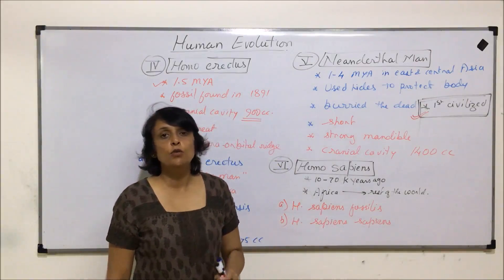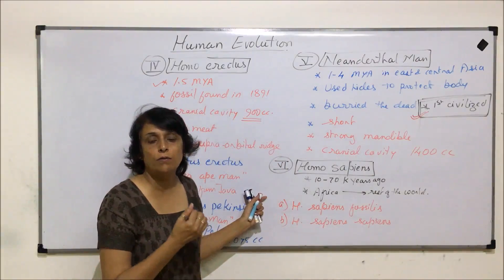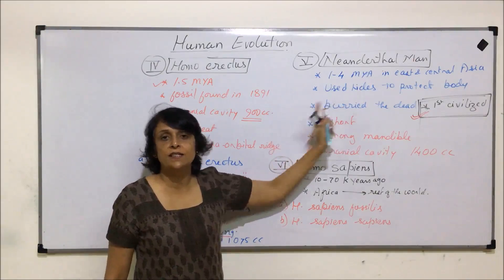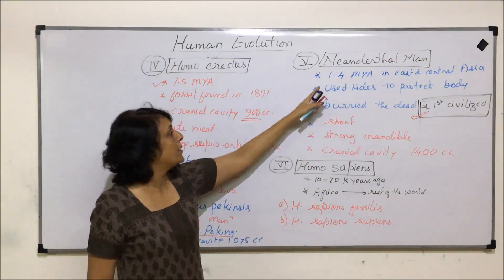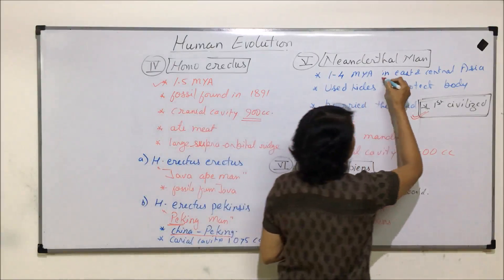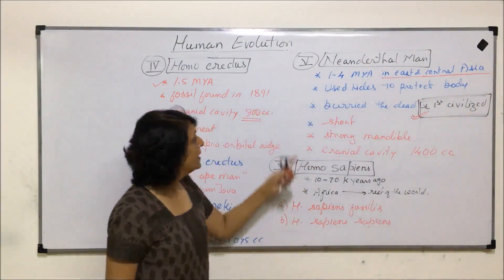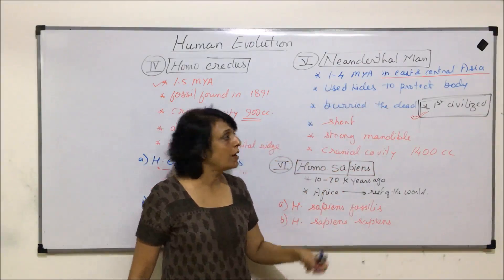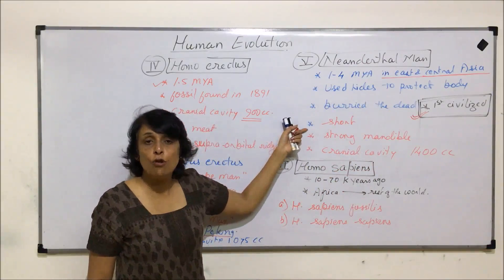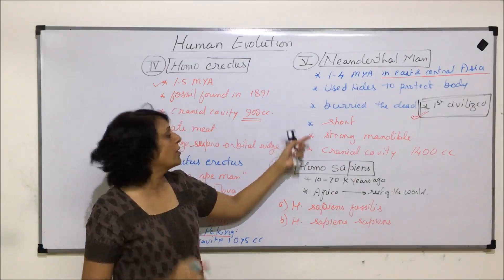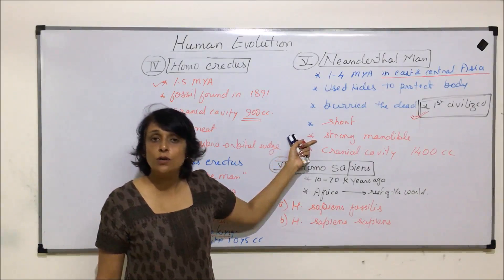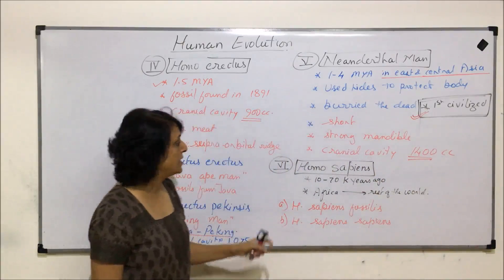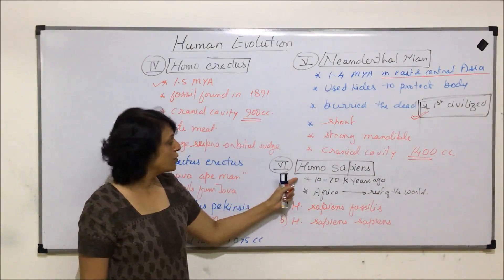After Homo erectus came Neanderthal Man, considered the first civilized organisms in this evolutionary history. They existed around 1 to 4 million years ago and were found in eastern and central Asia. They used hides to protect their body, buried their dead, had short stature, a strong mandible, and a cranial cavity of 1400 cc.